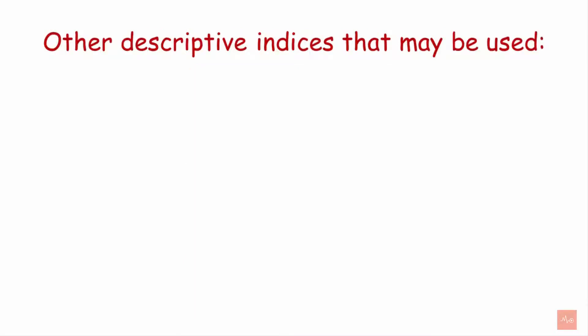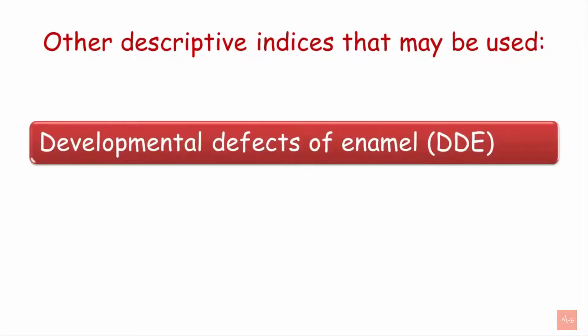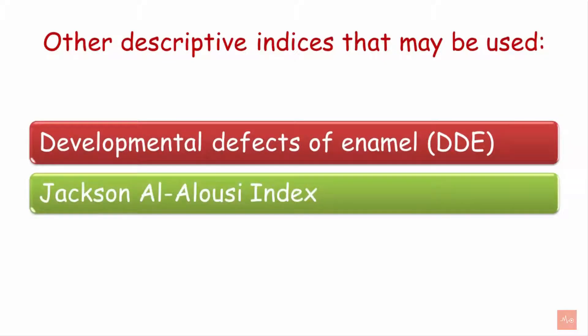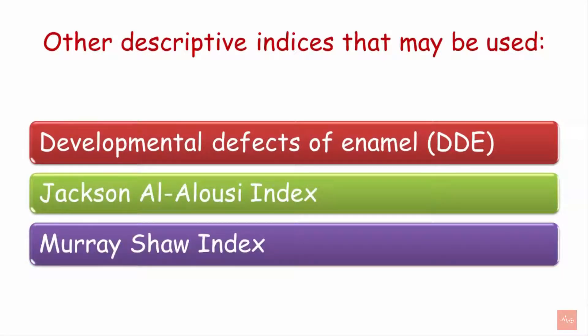Other descriptive indices that may be used for measuring dental fluorosis in a patient include developmental defects of enamel, the Jackson-Lalousey index, and the Murray-Shaw index.